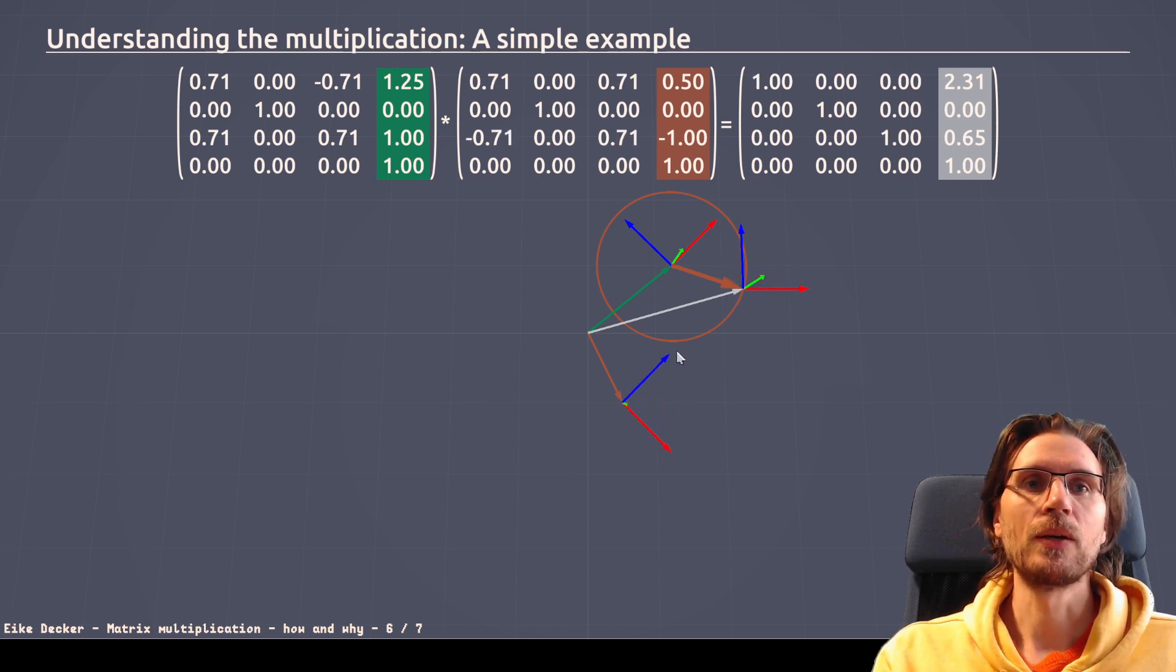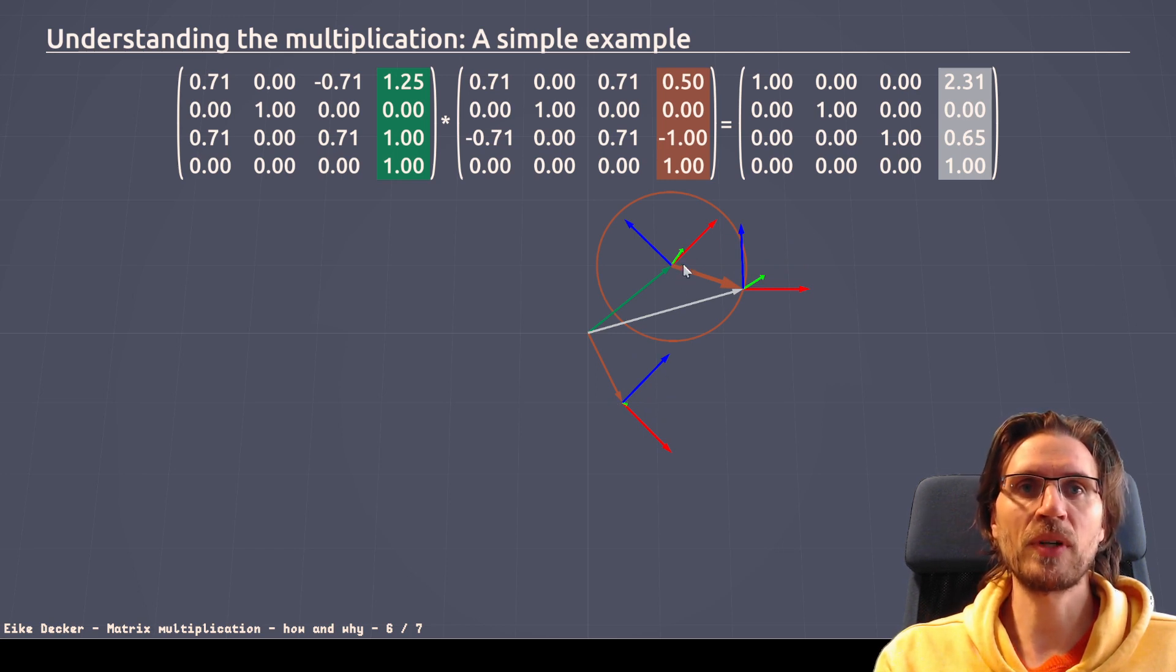This changes when we make a counter direction on the second matrix. So, now this matrix is rotating 45 degrees to the left, and this one is rotating 45 degrees to the right. And the result, when we multiply both of these matrices, is that this matrix, again, shows no sign of any rotation. But it is at a different location now. It was rotated by 45 degrees.